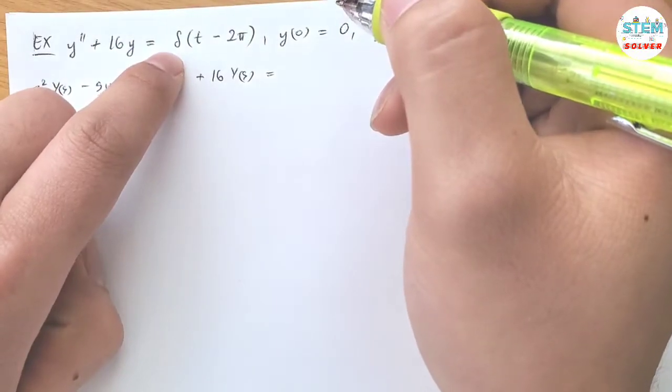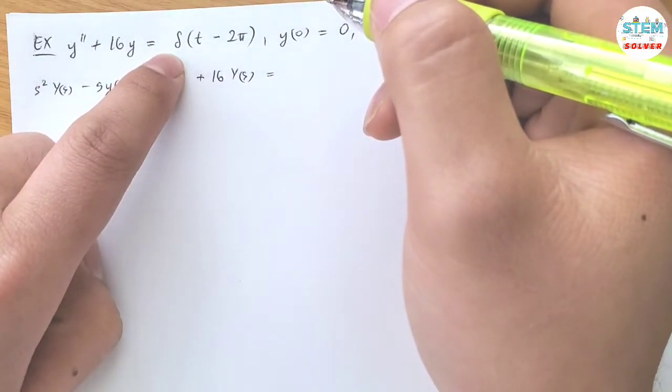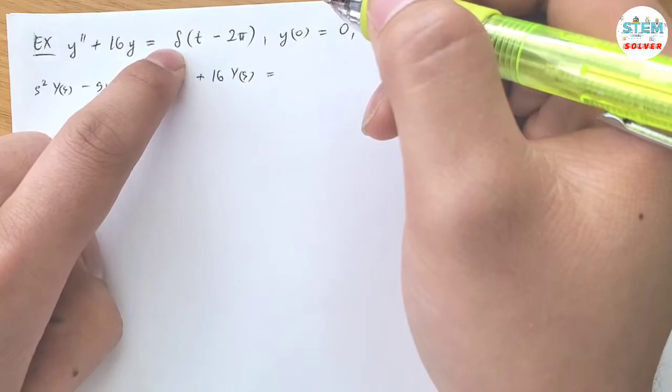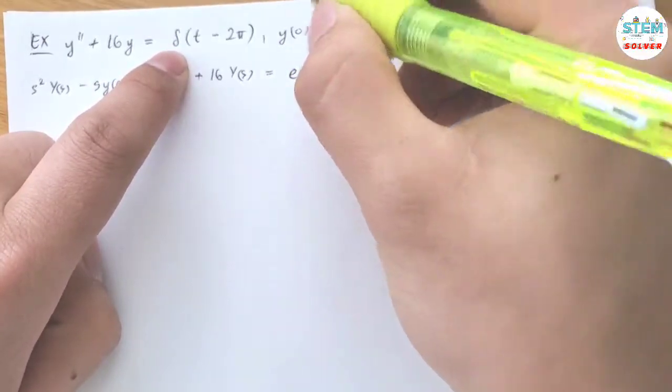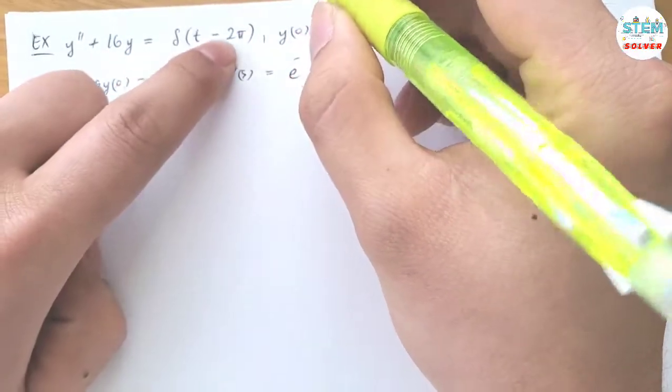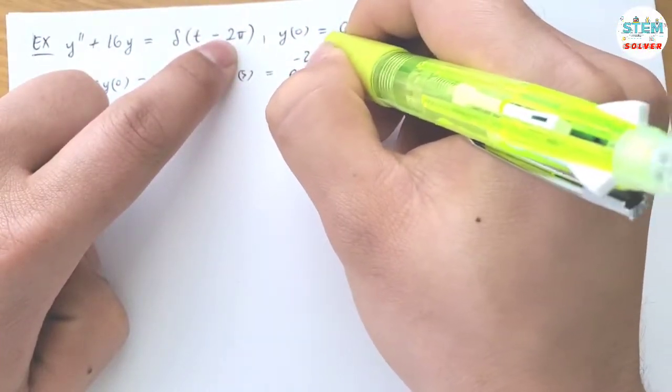so for this one, this is a direct delta function in the theorem, but this says that the Laplace transform of delta equals e to the negative s times this one, so you have negative 2π s.